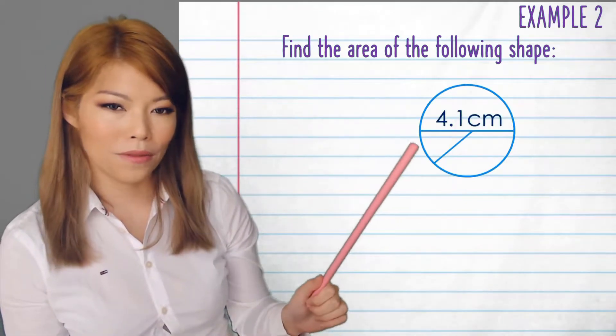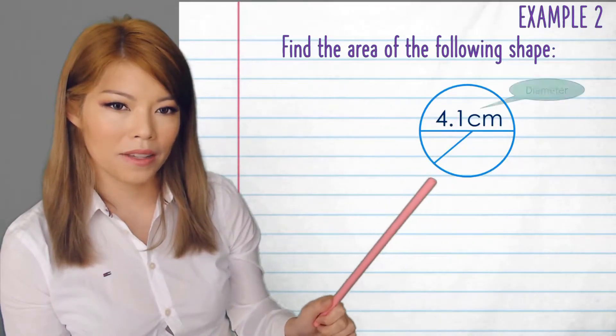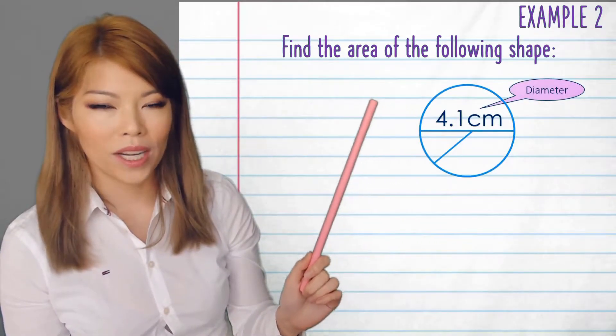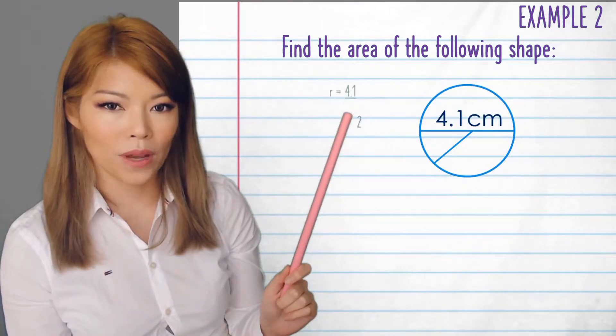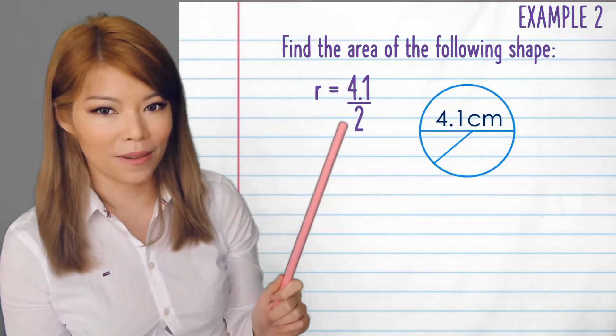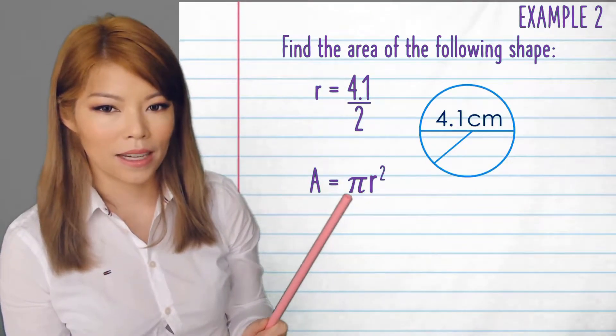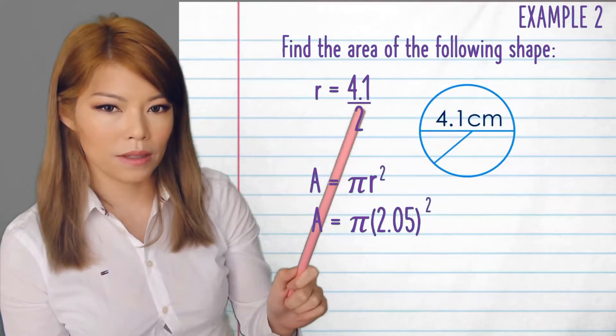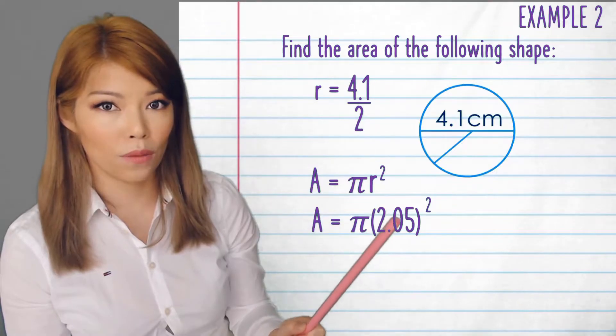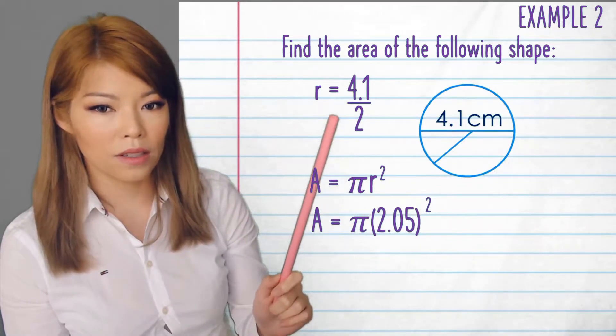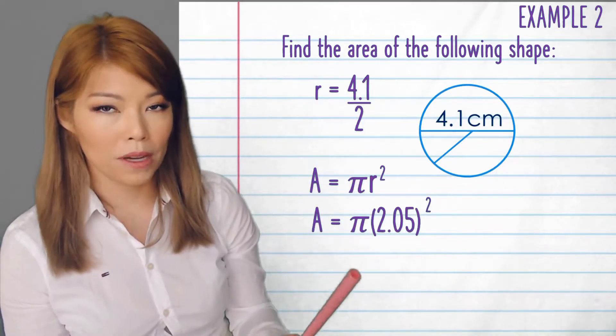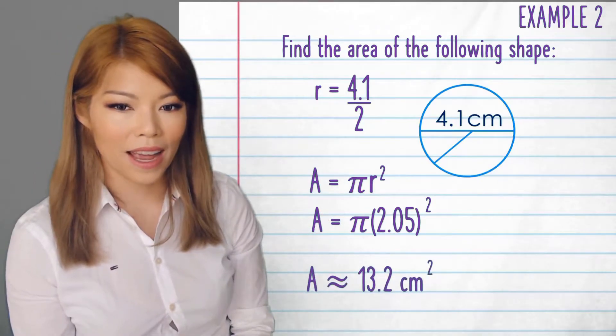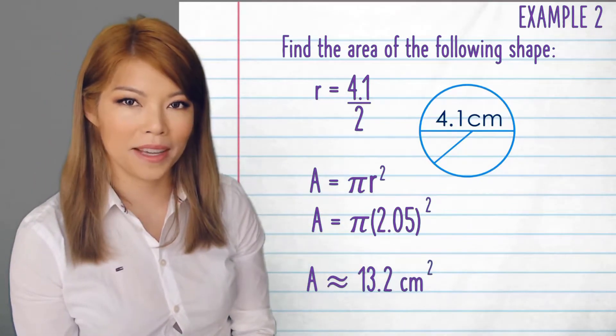Example 2, find the area of the following shape. This time they've given us the diameter. We need the radius for the area of a circle, so we have to divide it by 2 to get the radius. So now we can plug that into the area formula and we have pi times, dividing that by 2 is 2.05 squared. You can just plug all of that in, but make sure you use brackets. So the answer should be 13.2 centimeters squared.